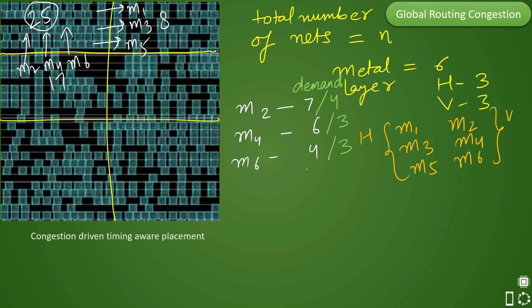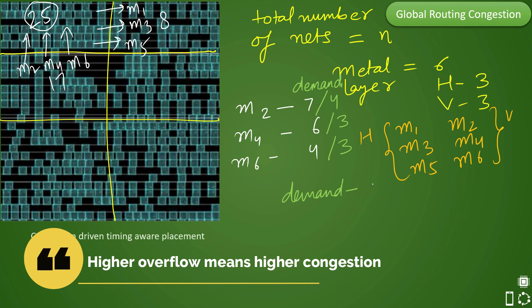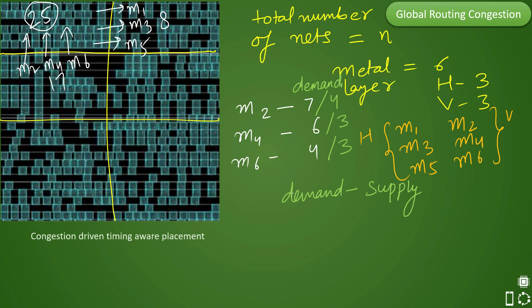So overflow means you have demand minus supply. How much tool is supplying and how much you are demanding, based on that you get your overflow. And in this particular case, let's say in M2 if we see, it is 7 minus 4, you have overflow of plus 3. If you see for M4, it is overflow of plus 3 and in M6 you have overflow of plus 1, and you have total overflow of 7. So if you see how the tool will mention in the heat map like this, that you have 17 demand but supply of 10 and overflow of 7 like this.